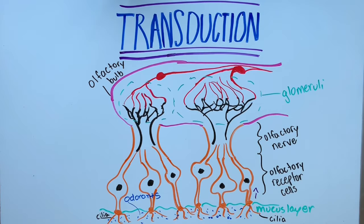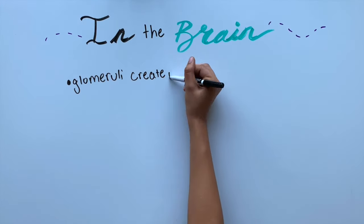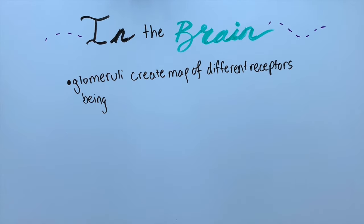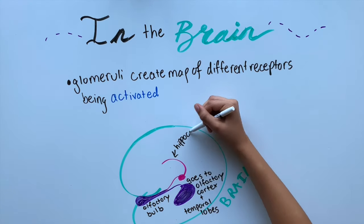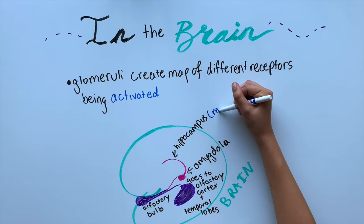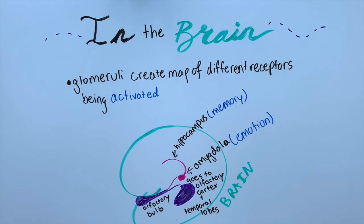The glomeruli create an organized map of the different receptor cells that are being activated, and the olfactory bulb directly relays the information to the olfactory cortex and areas in the temporal lobes. The olfactory cortex has direct influence on the amygdala, which affects emotion, and the hippocampus, which plays a role in memory. This is why specific smells remind us of certain memories.